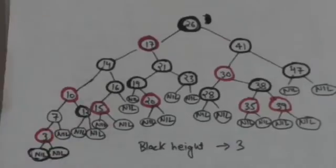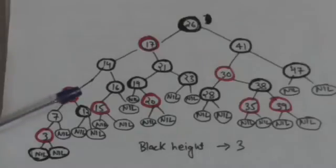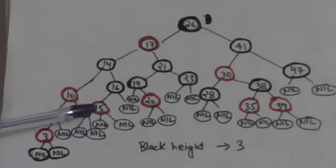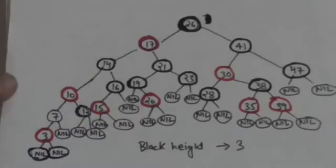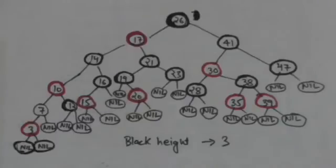Now let's look at an example red-black tree. It is a binary search tree and it satisfies all properties of red-black trees. Every node has a color, either red or black, and the root of this tree is black. If a node is red then its both children are black. Every leaf, which is a nil node, is black in this tree.